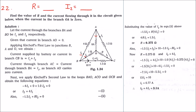Now applying Kirchhoff's Second Law to the first loop: minus 4·i1 plus 0 (since branch current of OA is zero, the voltage drop is also zero) plus 1·i2 equals zero, as the current is opposing. Simplifying, we get Equation 1: i2 is equal to 4 times i1.